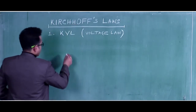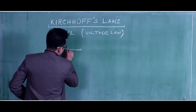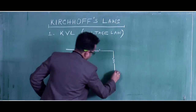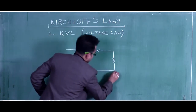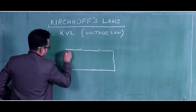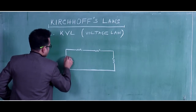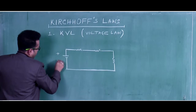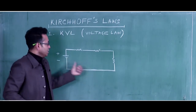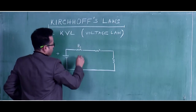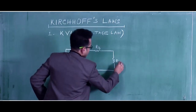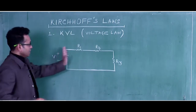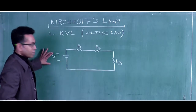Let us consider a circuit. Here we have considered a purely resistive circuit where a voltage is given — say a DC voltage. For easy explanation we have considered a resistive circuit where the resistances are R1, R2, and R3, and the source voltage is V. As it is a resistive circuit, we have considered DC voltage.